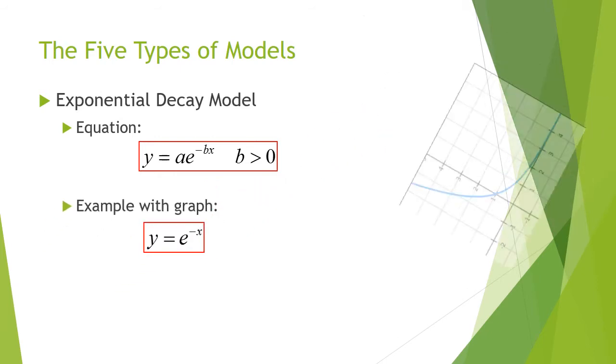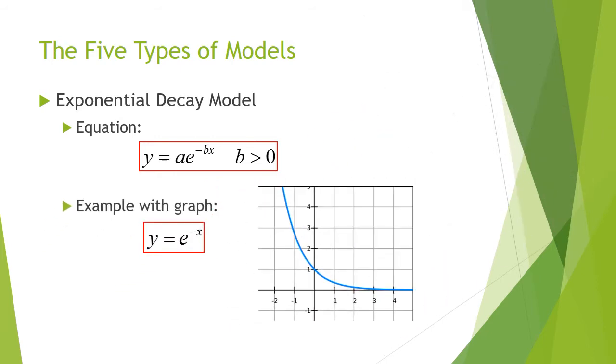y equals e to the negative x is the most basic one you can have, and here's what it looks like. Notice that decay, unlike growth which starts off slowly and gains speed, decay starts off quickly, goes downhill very quickly, and then over time levels off. It also has a horizontal asymptote at y equals zero.